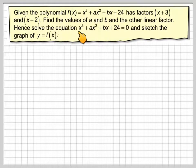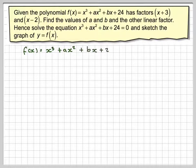Hence, solve the equation x³ + ax² + bx + 24 = 0 and sketch the graph of y = f(x). So, writing down our function, we've got to find the value of a and the value of b.